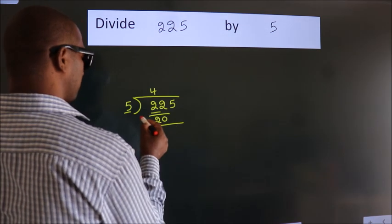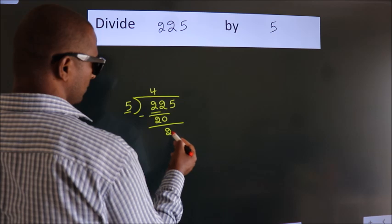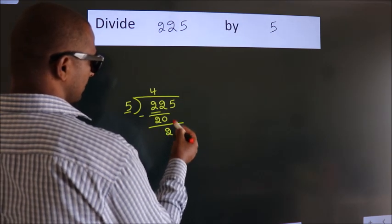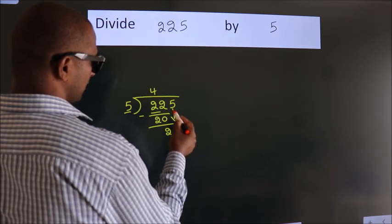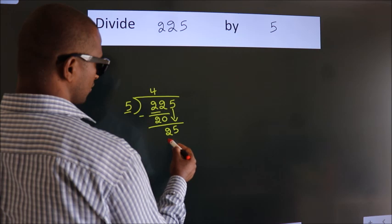Now we should subtract. We get 2. After this, bring down the beside number. So 5 down. So 25.